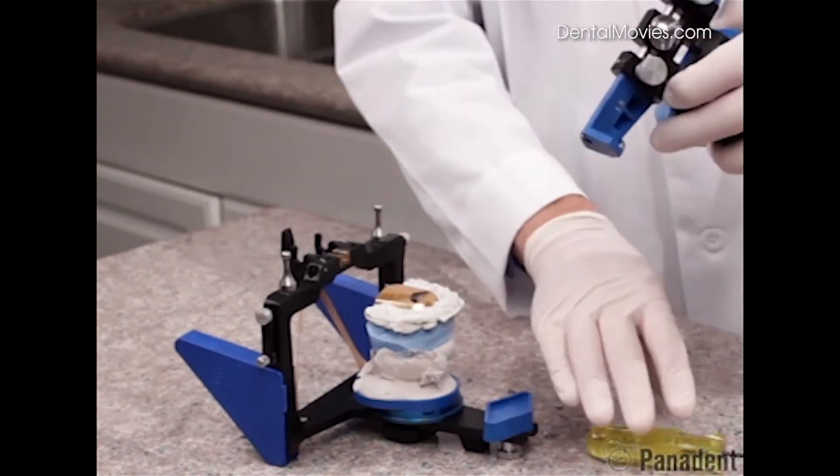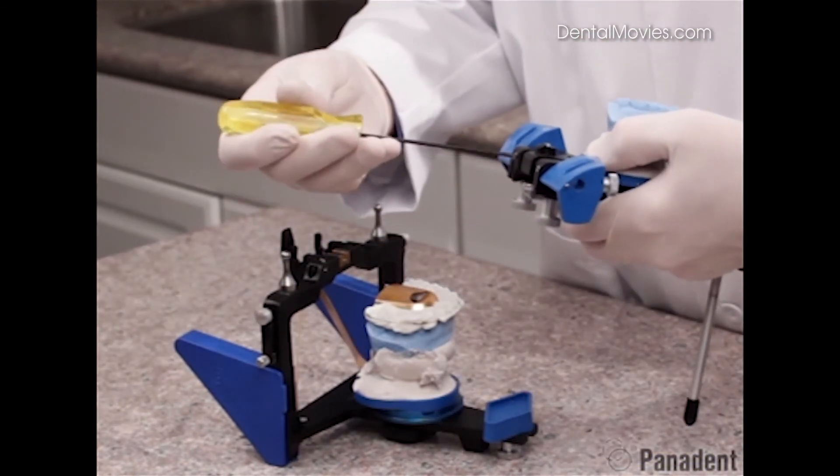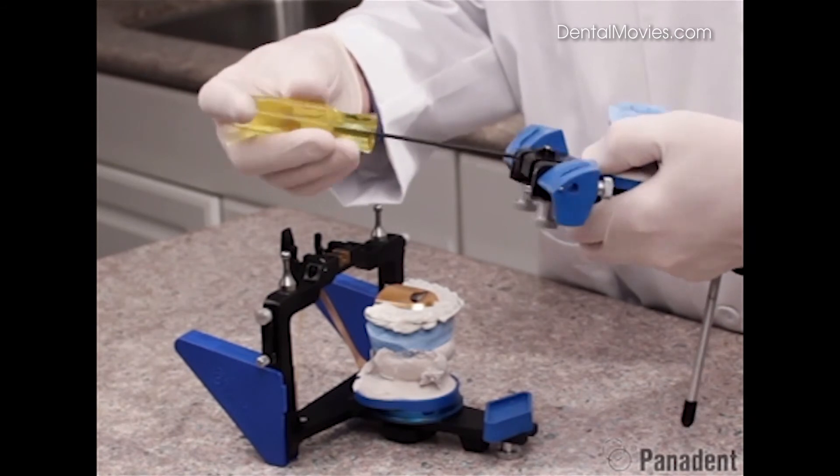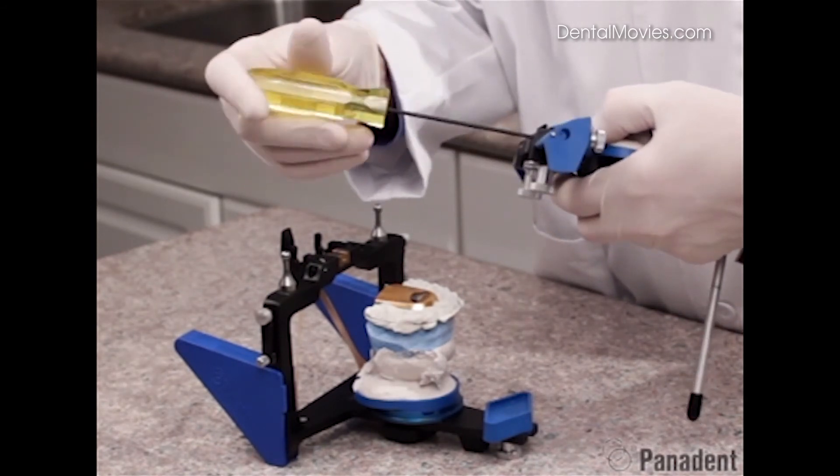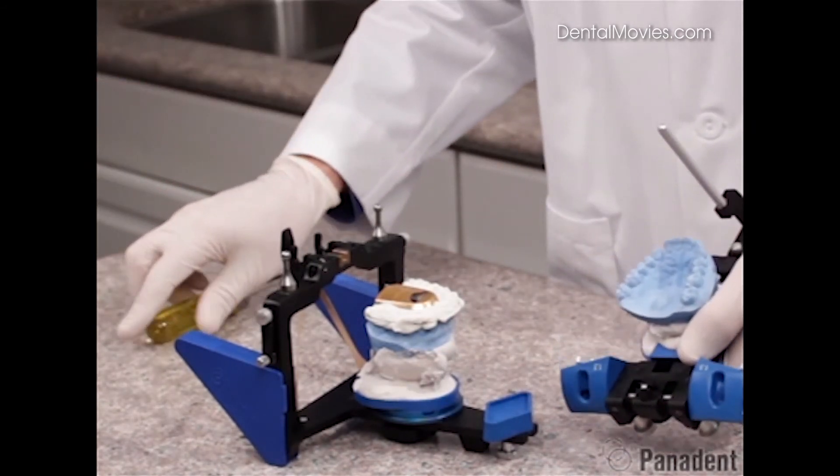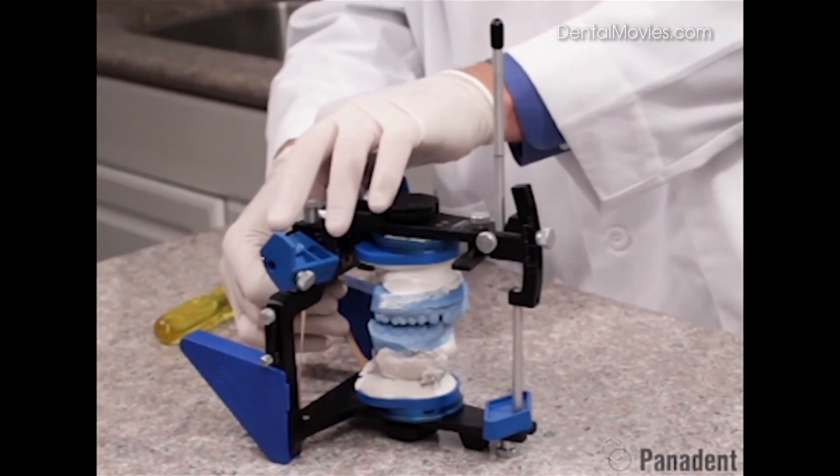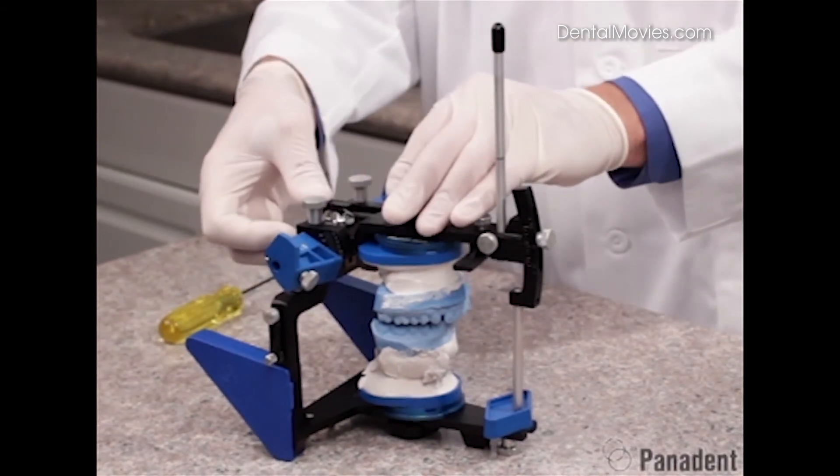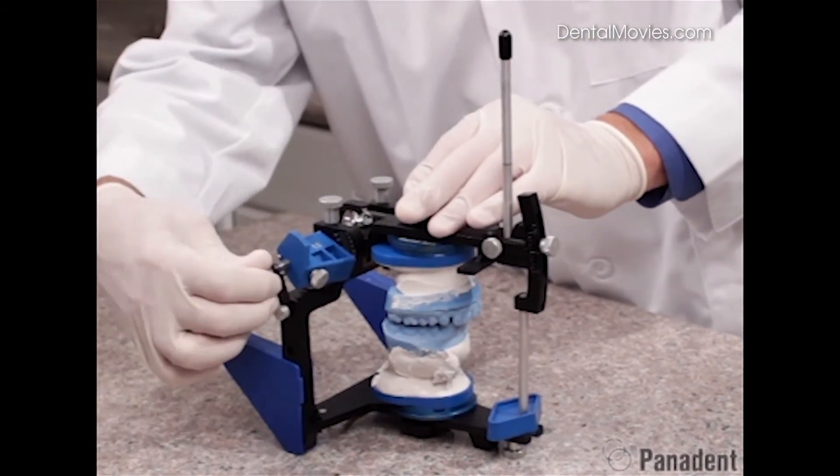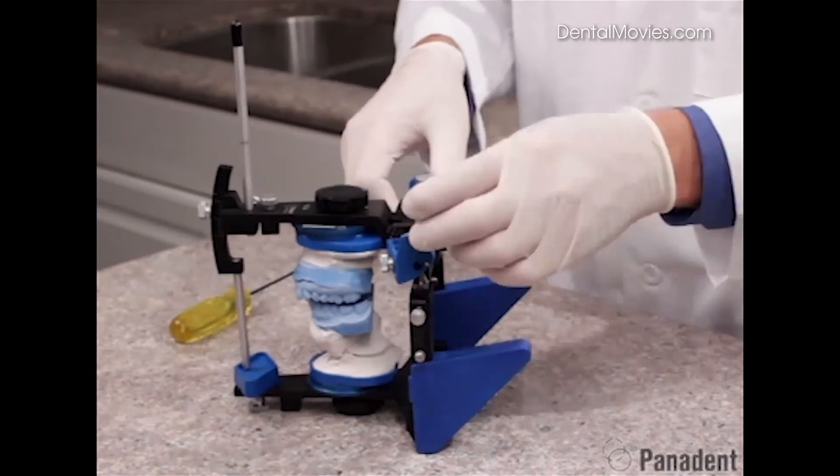We can now remove the upper frame and go ahead and lock these lock screws in the back, locking that position of the motion analogs. We can then remove the protrusive record and add back the upper frame to the articulator. We can release the rubber band here in the back, re-engage the centric latch, and re-engage the Dynalink pins back into the motion analog.